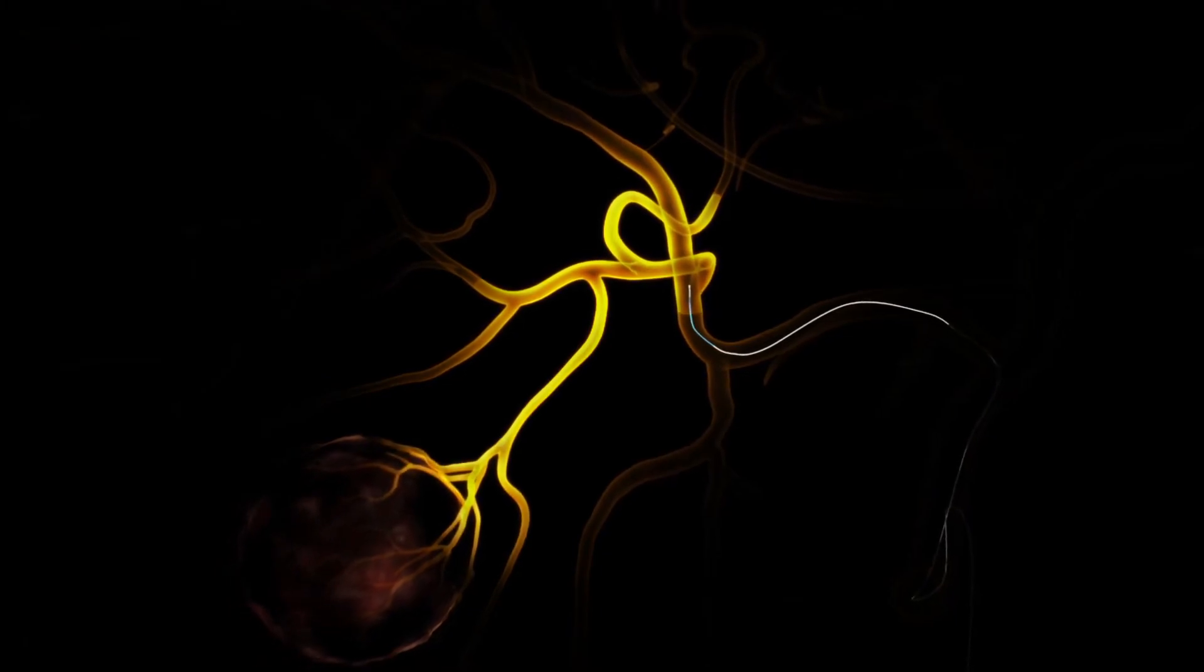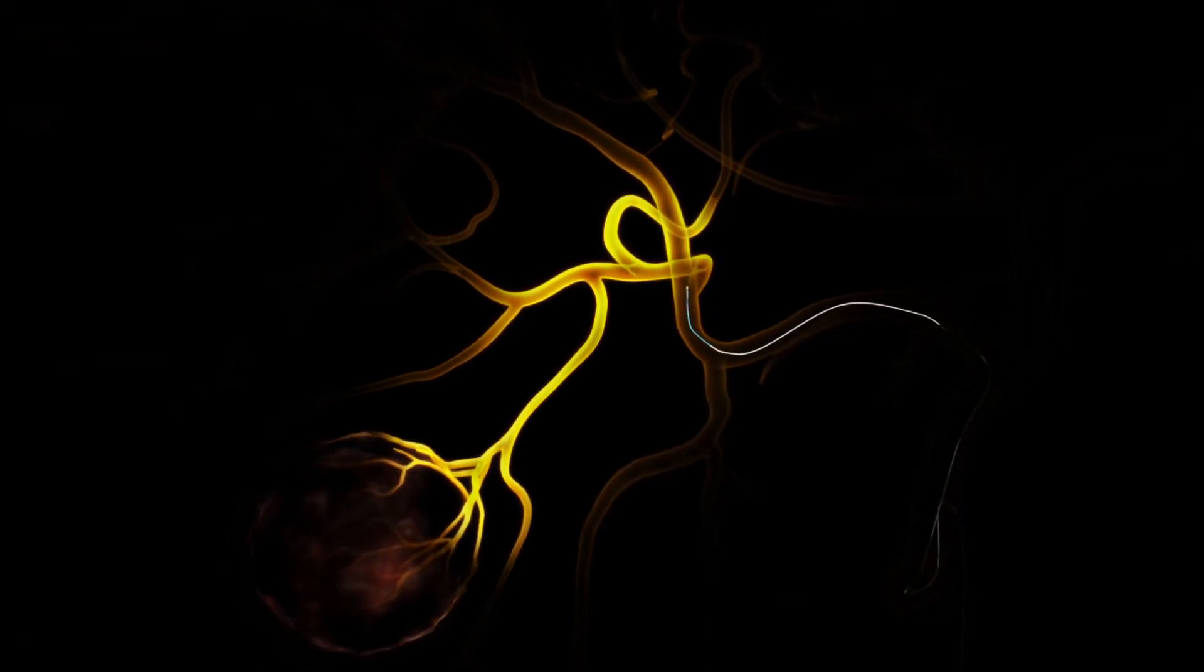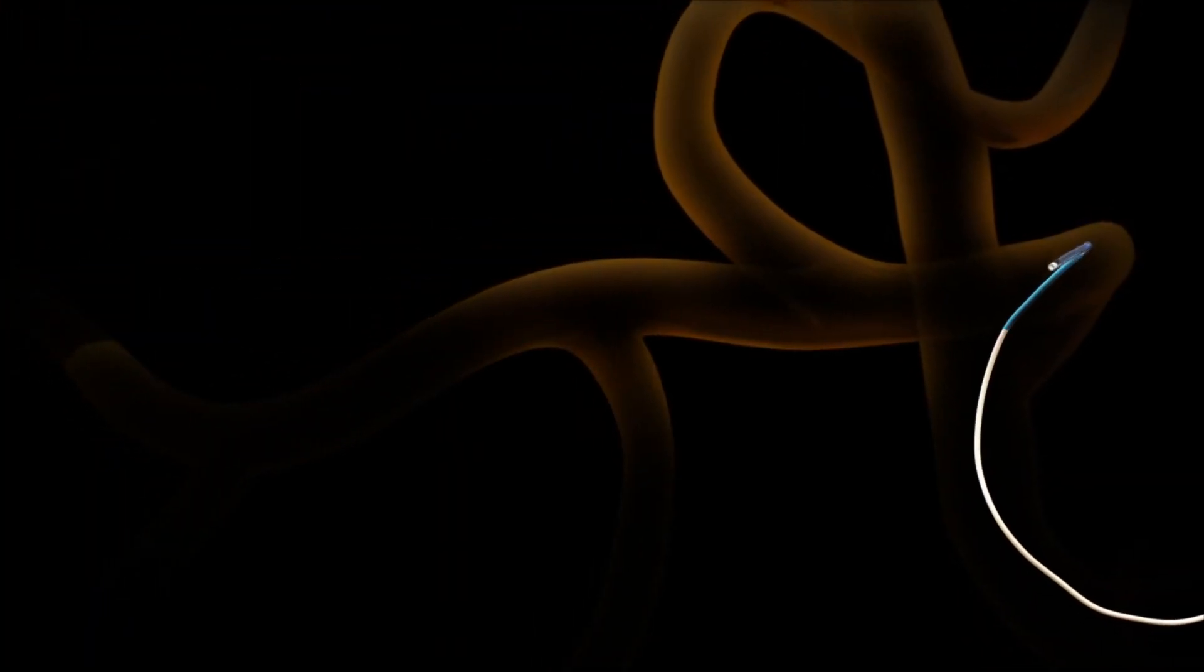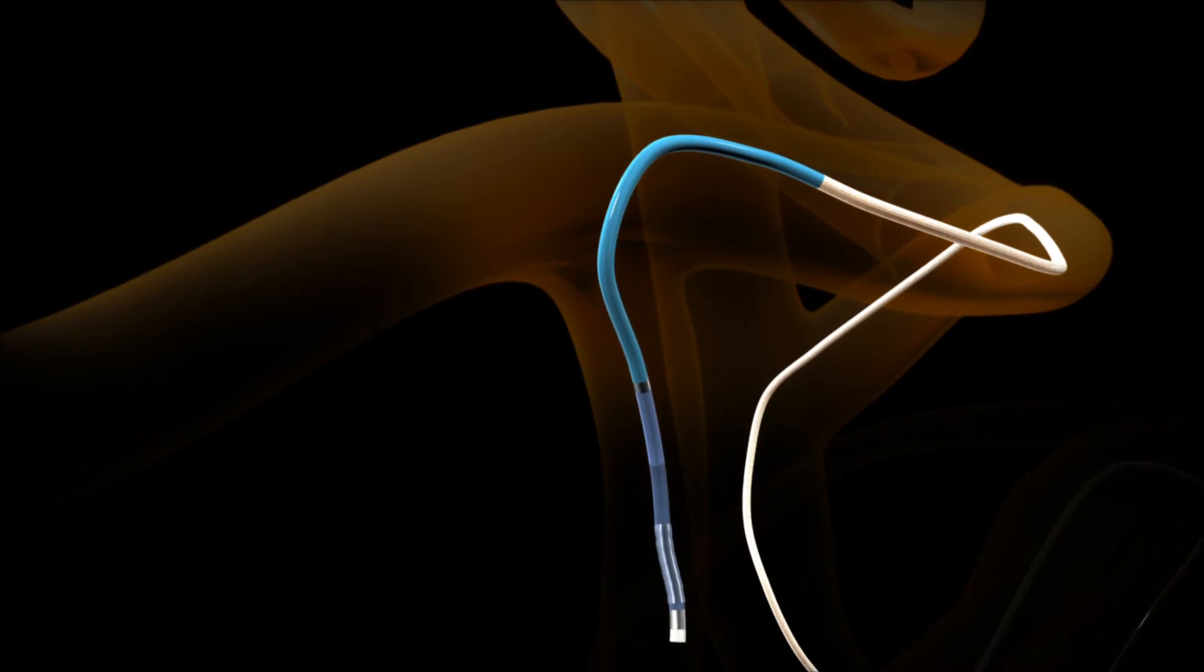While watching under fluoroscopy, control the articulation of the tip by manipulating the steering dial in the catheter hub. The ability to articulate and track the Swift Ninja through vessels can reduce the number of guidewire and micro catheter exchanges, potentially saving procedure time and product costs.